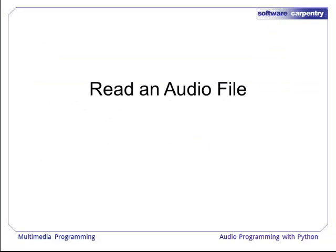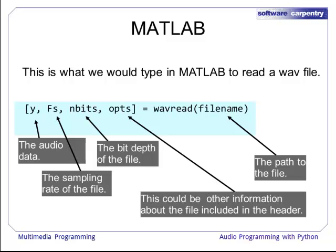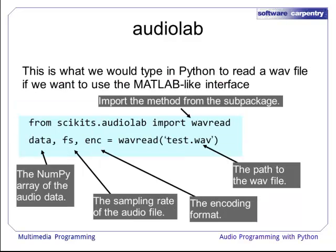We'll first go over how to read an audio file. In MATLAB, you would typically type in a WaveRead call, including the path to the file. Y would be the audio data returned, with FS being the sampling rate and bits being the bit depth of the audio file. WaveRead could also return other optional information included in the header. To use AudioLab with its MATLAB-like interface in Python, you would type: from scikits.audiolab import wavread. Like MATLAB, you include the path to the Wave file, and you are returned the NumPy array of audio data, the sampling rate, and the encoding format.